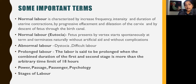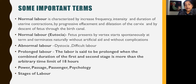Prolonged labour is another term. Labour is said to be prolonged when the combined duration of first and second stage is more than the arbitrary time limit of 18 hours. At times prolonged labour is responsible for obstructed labour. The three P's — power, passage, and passenger — are responsible for the whole phases of labour. Nowadays a fourth dimension, psychology, has also been added. We all know the three stages of labour: first, second, and third stage, followed by one stage of observation for PPH.